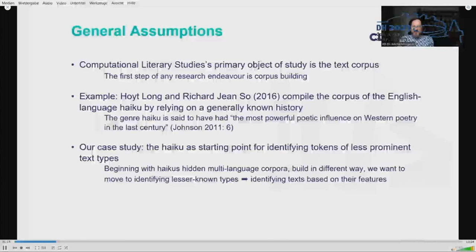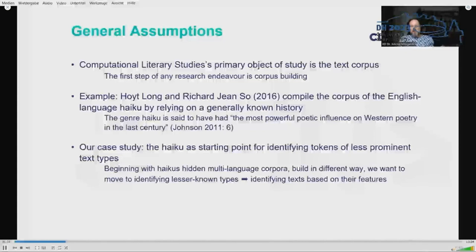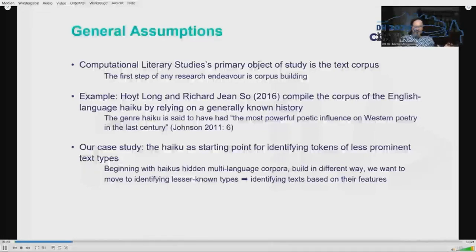Taking the haiku as a starting point, we would like to use this relatively well-known and thus verifiable case to enhance the process of building corpora over different, less prominent genres while using resources available online. First, we expand the research to corpora of texts in different languages and tri-cultures so that we can move on to identifying tokens of lesser-known types. In the Anglo-Saxon tradition, the history of haiku reception is well-known to a degree that the cases where a classifier misclassifies a poem are also really interesting.